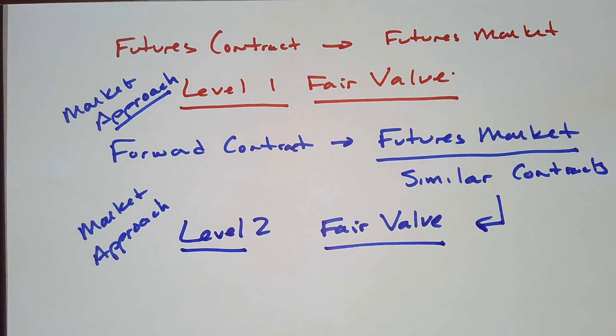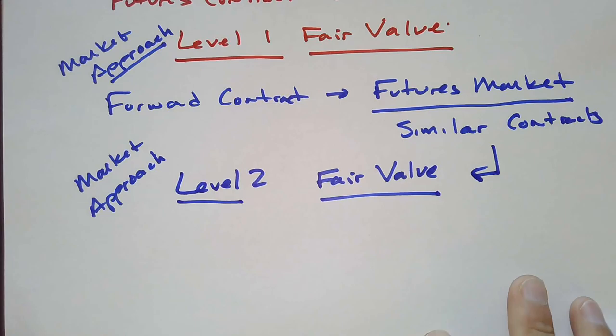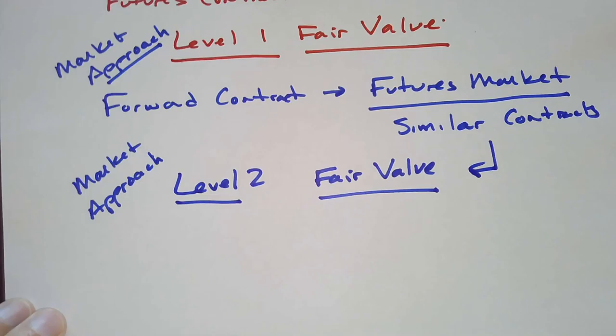Now, what if, and as the accountant, you have the choice. You don't have to use a market approach. You can always use an income approach. Well, how do you do a fair value income approach on a forward contract? Well, let's think about that.